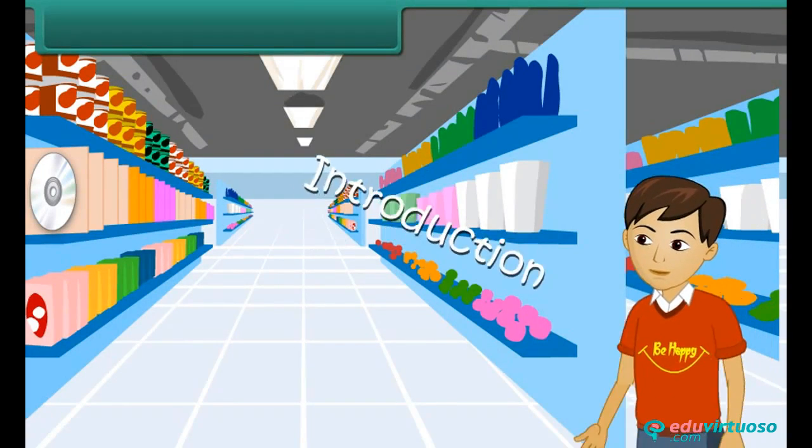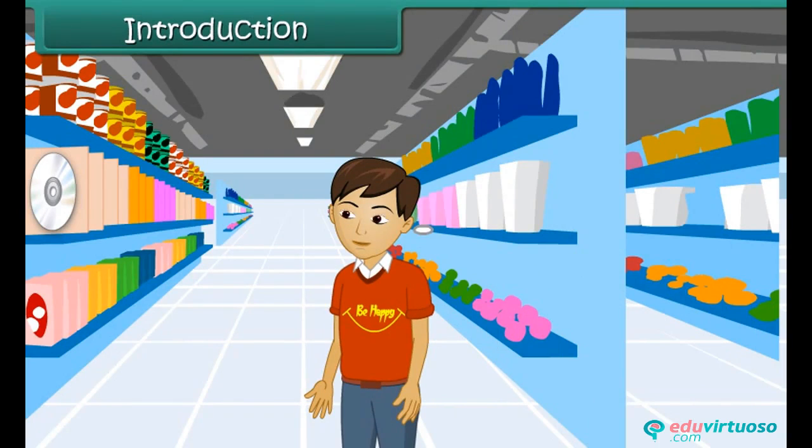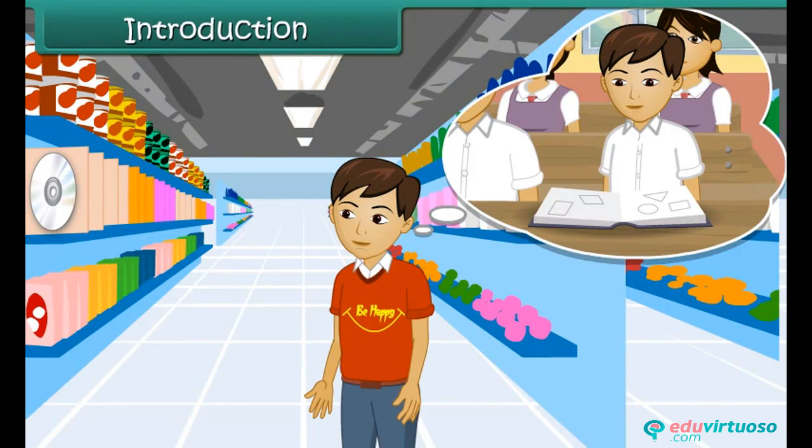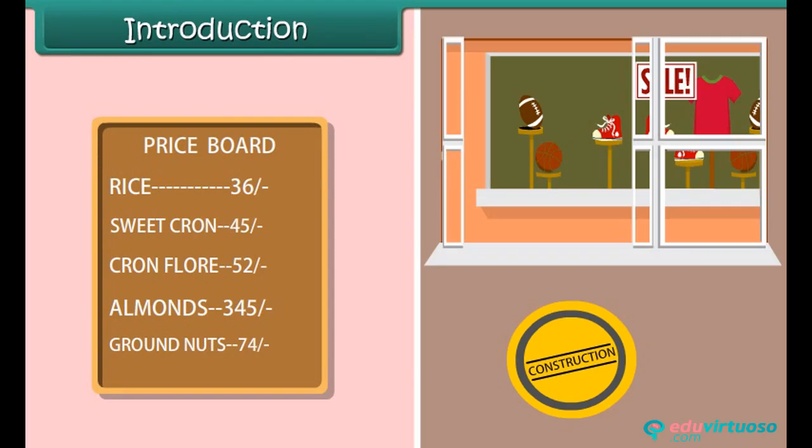Introduction. John was at a shopping mall. Today at school he had learned about various shapes. He looked around and saw various shapes in the objects around him.